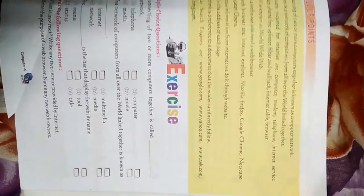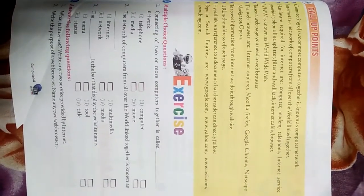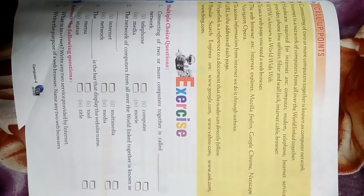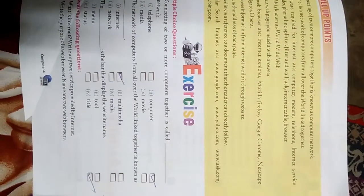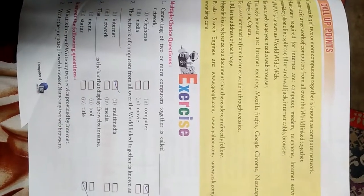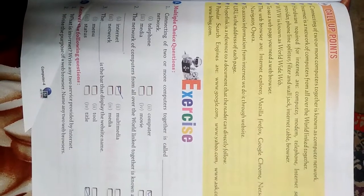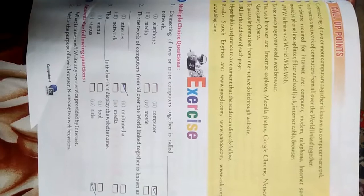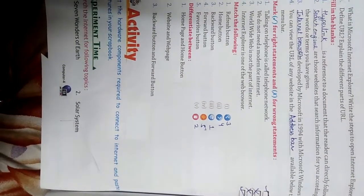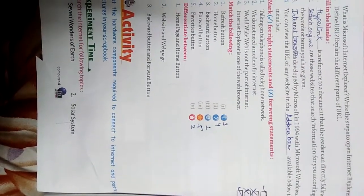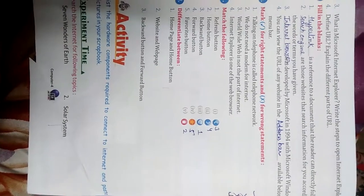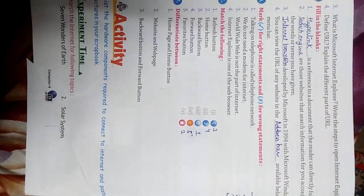Now for the exercise. MCQ 1: Connecting two or more computers together is called a computer network — the right answer is computer network. MCQ 2: A network of computers from all over the world linked together is known as — the right answer is internet. MCQ 3: The dash is a bar that displays the website name — the title bar displays the website name. Fill-ups: Hyperlink is a reference to a document that the reader can directly follow. Search engines are websites that search information according to words given. Internet browser was developed by Microsoft. You can view the URL of any website in the address bar.